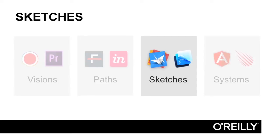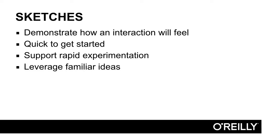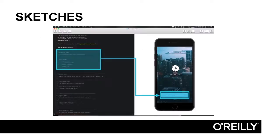Third, we have sketches. Sketches are prototypes that show users exactly how one part of an experience will feel. Just like Photoshop allows visual designers to converge upon pixel perfection, sketches allow interaction designers to converge upon nuanced interaction details. Sketches are quick to get started, support rapid experimentation, and leverage ideas familiar to interaction designers, such as states and transitions. At their best, these toolkits merge design and code into one single streamlined workflow. Designers build sketches by taking static layouts and scripting behaviors on top of them — using programming languages specifically designed for this purpose, so they can be applied with great speed.